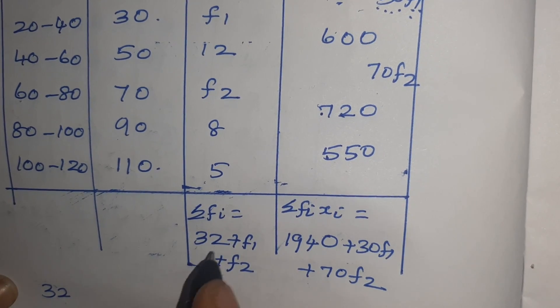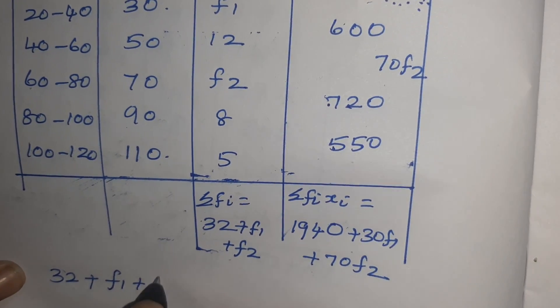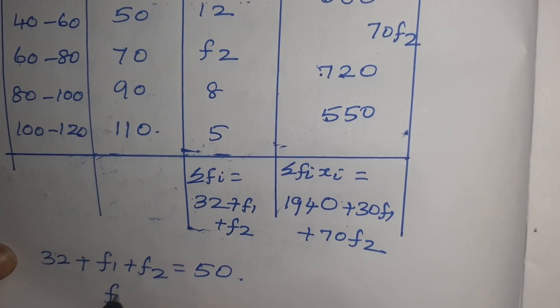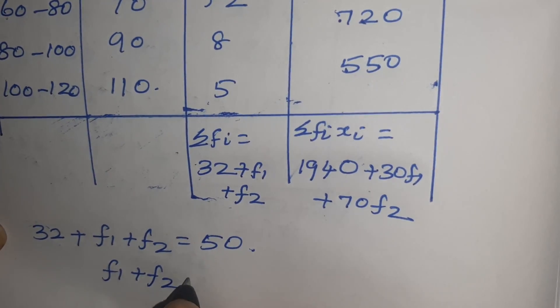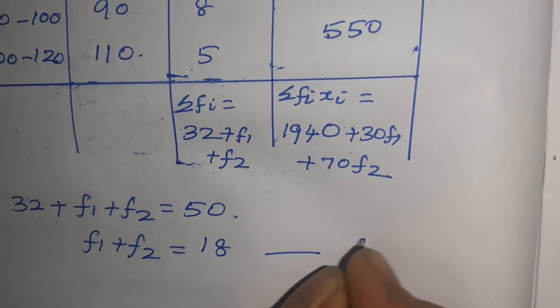Here what is given is sigma F is given as 50. Therefore, we found that sigma F equals 32 plus F1 plus F2. It is given that it is 50. So F1 plus F2 equals 50 minus 32 equals 18. Make this as first equation.